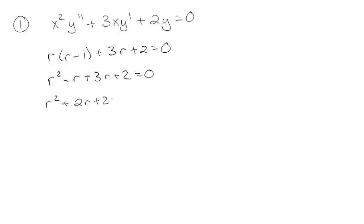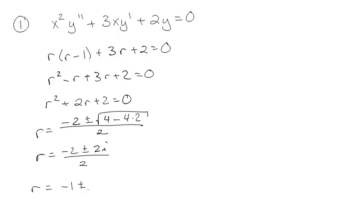r² + 2r = 0. So r is equal to negative b plus or minus the square root of b² minus 4ac over 2a, which gives negative 2 plus or minus 2i over 2, so r = negative 1 plus or minus i.